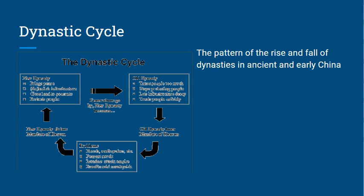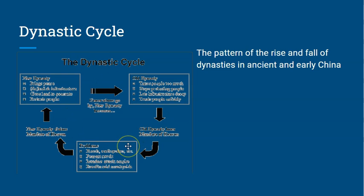On the government side, there is the dynastic cycle — a pattern of the rise and fall of dynasties in ancient and early China. The dynastic cycle travels in a circle. A new dynasty comes about and brings in good laws; people are happy and China is prospering.